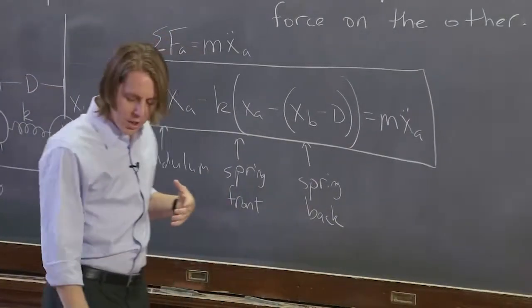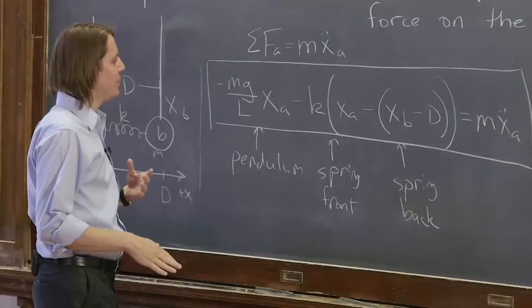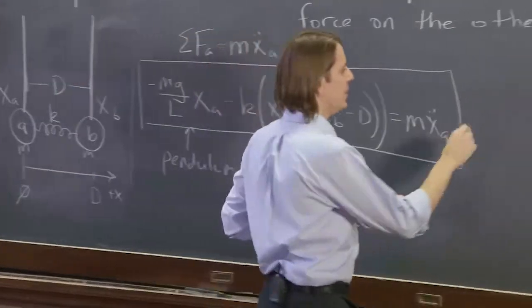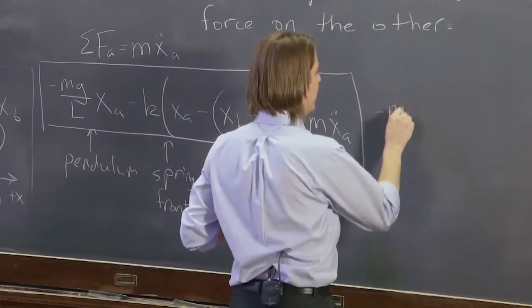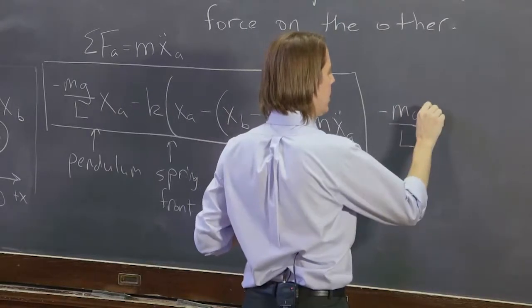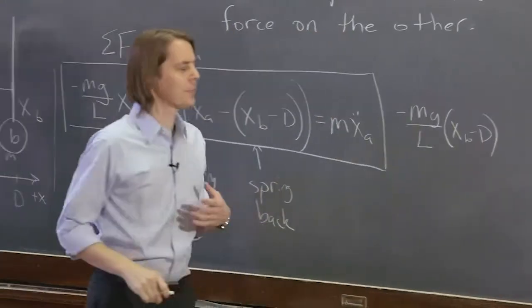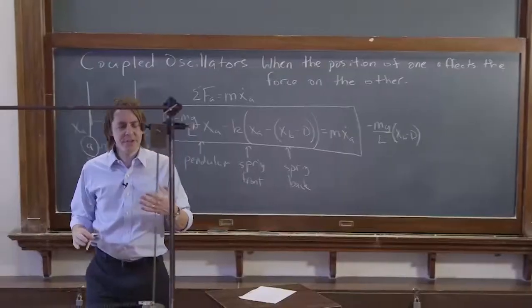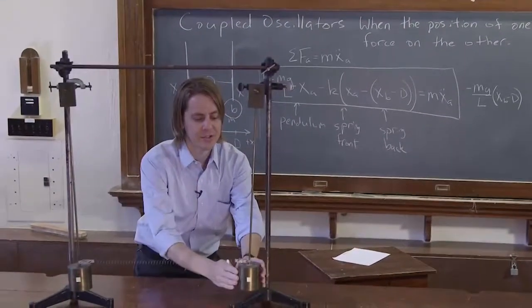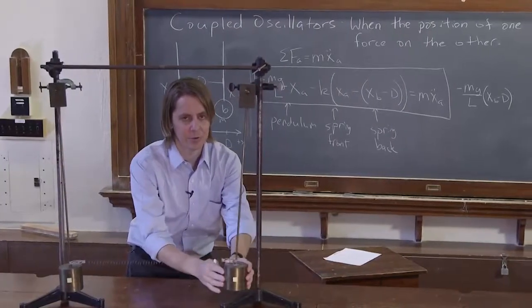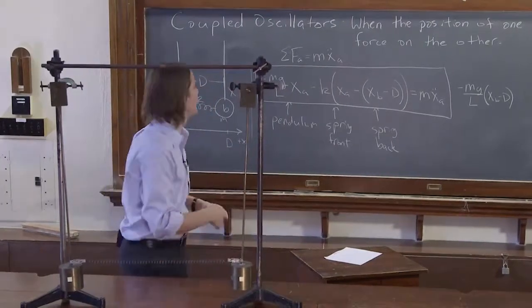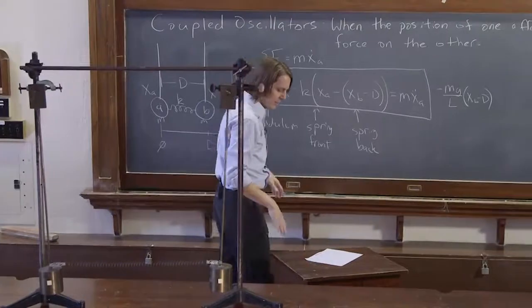Real quick, let's write the equation of motion for B. We won't go into as much detail. But it's basically minus mg over L times xB. But we have to remember it's xB minus D. It's the deviations from the position D that give you the restoring force due to the pendulum motion. So whenever you see xB, it's always going to be xB minus big D.